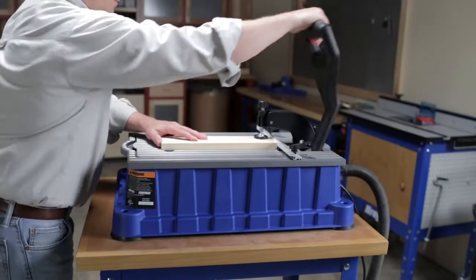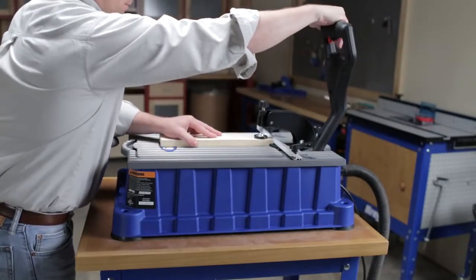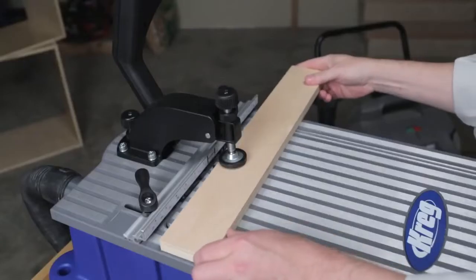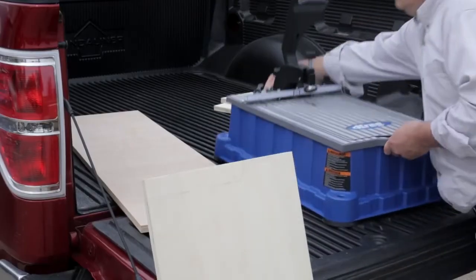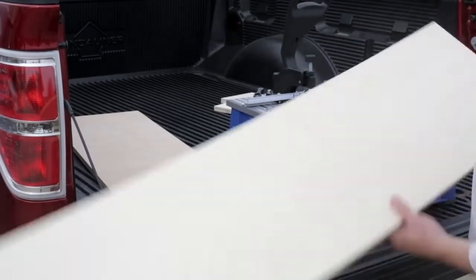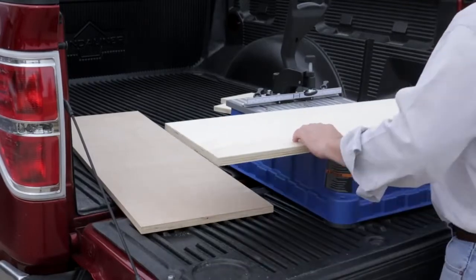Light but durable construction makes the Foreman perfect for use in the shop, around the home, and on the go. This hard-working machine weighs only around 20 pounds, thanks to its cast aluminum table and tough molded base, so it's easy to transport from the shop to the job site.